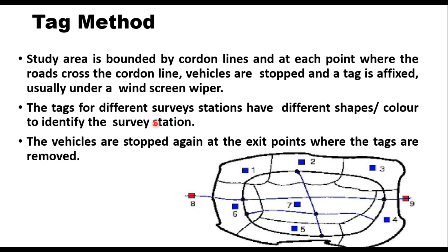The tag method also uses a study area bounded by cordon lines. At each point where roads cross the cordon line, vehicles are stopped and a tag is affixed, usually under a windscreen wiper. Tags for different stations have different shapes and colors to identify the station. Vehicles are again stopped at the exit point, tags are removed, and the time of fixing and removal can be noted to determine actual journey time. Similar to the license plate method, entry and exit details must be matched, making it cumbersome; it also requires stopping vehicles at both entry and exit.